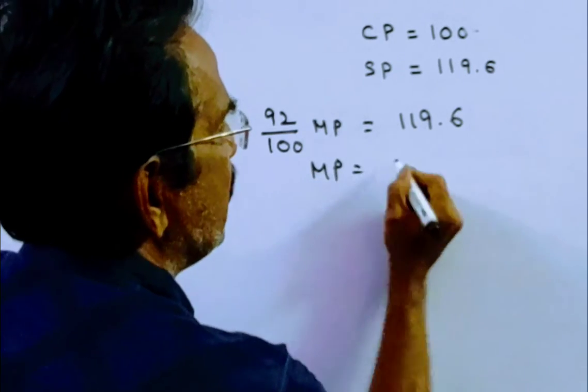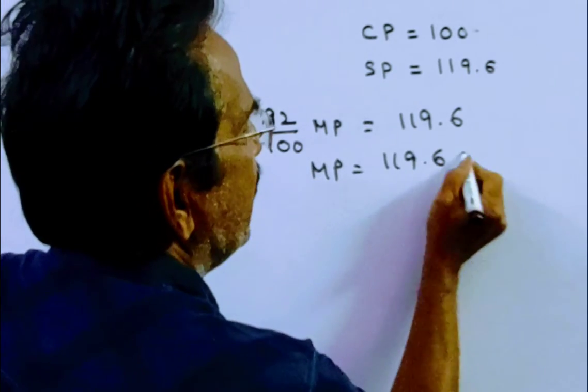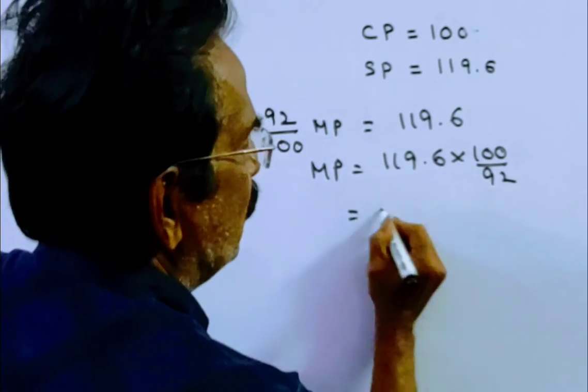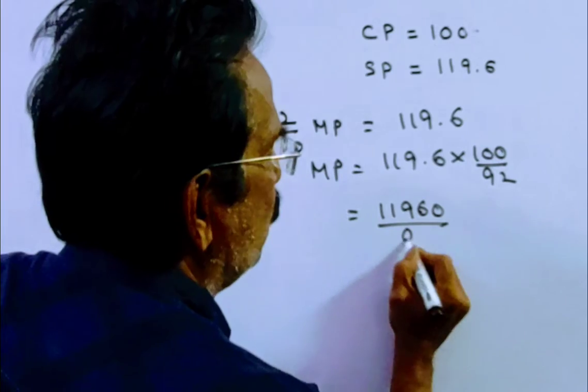So, market price is equal to 119.6 into 100 by 92. This is equal to 11,960 by 92.